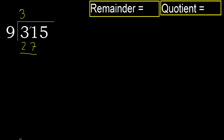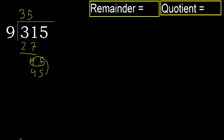Subtract. 4. Next. 45. 9 multiply by 5: 45 is not greater, ok. 45 minus 45 equals 0.